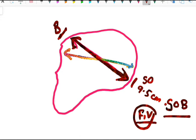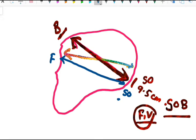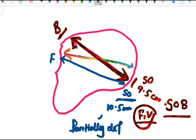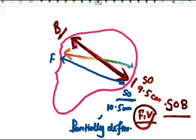The second diameter is suboccipitofrontal, which I will draw here. This connects the frontal region and the suboccipital region. Its length is 10.5 cm. Here the head is partially deflexed, with vertex presentation.